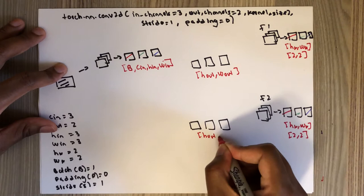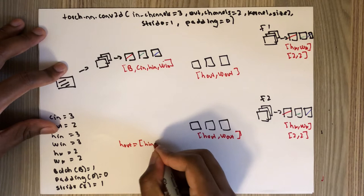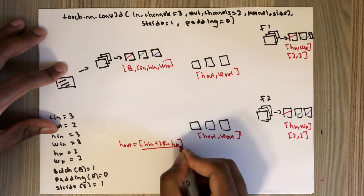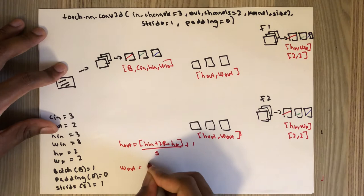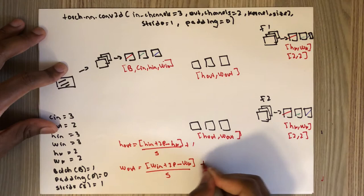What is H_out and W_out? H_out equals H_in plus 2 times padding minus H_k, divided by the stride, plus 1. And W_out equals W_in plus 2 times padding minus W_k, divided by the stride, plus 1.